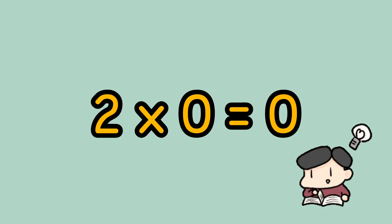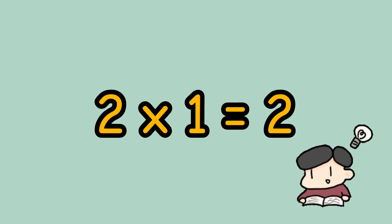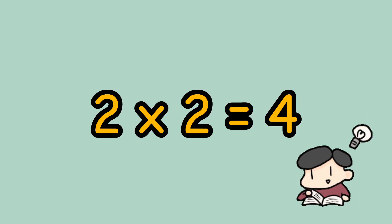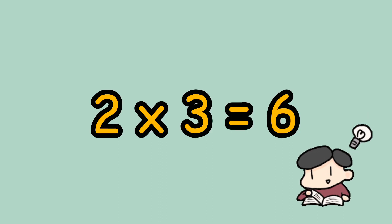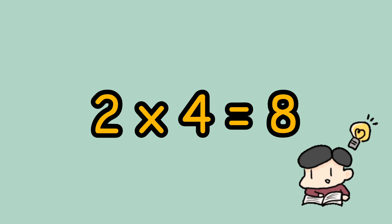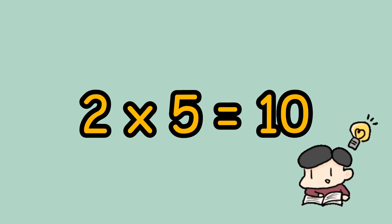2 times 0 equals 0. 2 times 1 equals 2. 2 times 2 equals 4. 2 times 3 equals 6. 2 times 4 equals 8. 2 times 5 equals 10.